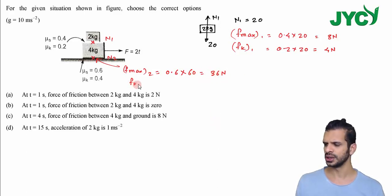And here the kinetic friction will be 0.4 into 60 which is 24 newton.